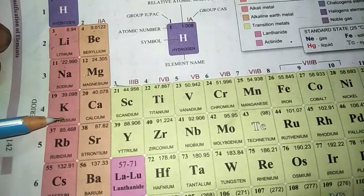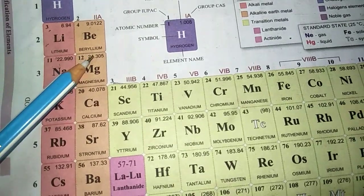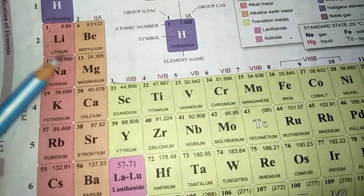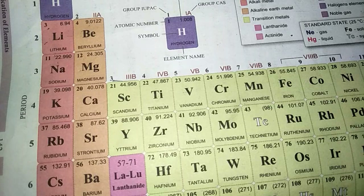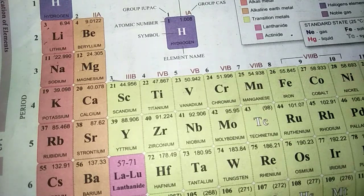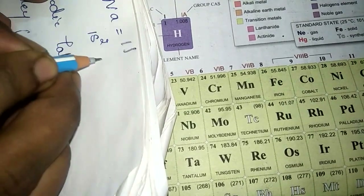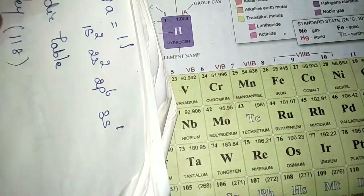The first group is called the alkali family and the second group is called the alkaline earth metals. These two groups are called s-block elements because when you write the electronic configuration using subshells, all elements end with the s subshell. For example, sodium has atomic number 11; its electronic configuration is 1s² 2s² 2p⁶ 3s¹ — it ends with the s subshell.